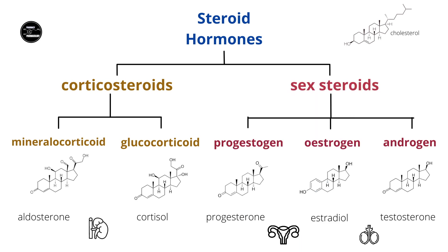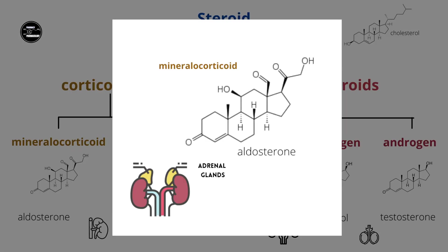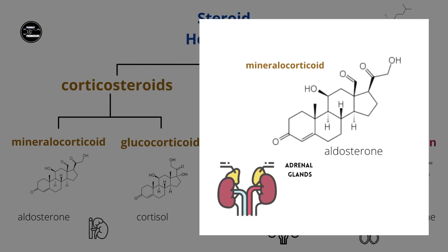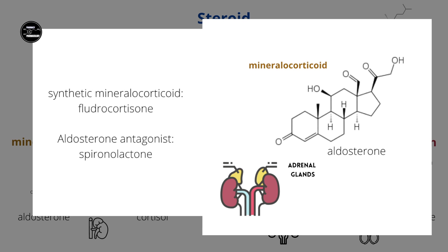Of the mineralocorticoid steroids, the main one is aldosterone. Aldosterone acts on the nephrons and regulates sodium and water retention, and that is the origin of the name mineralocorticoid. There is a synthetic mineralocorticoid drug called fludrocortisone, which is used for hormone replacement therapy in people with adrenal insufficiency. Spironolactone is an aldosterone receptor antagonist with potent anti-mineralocorticoid activity.